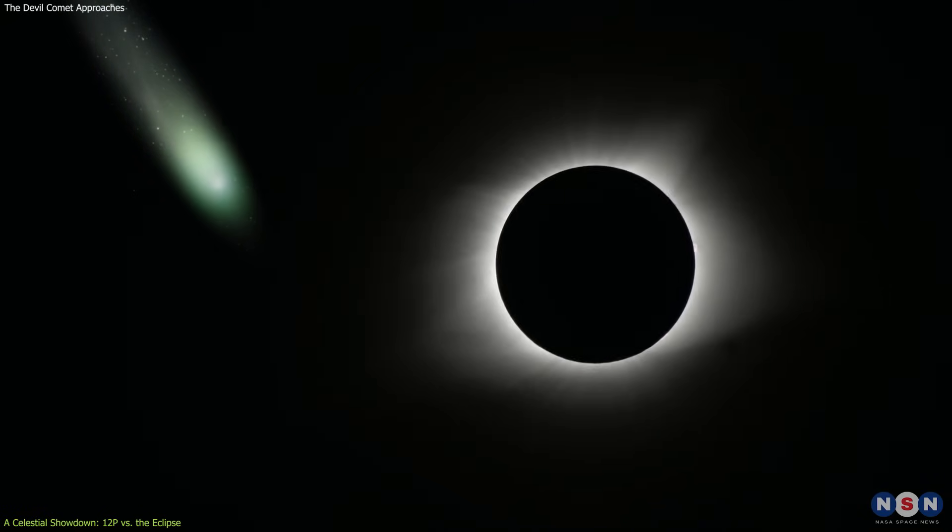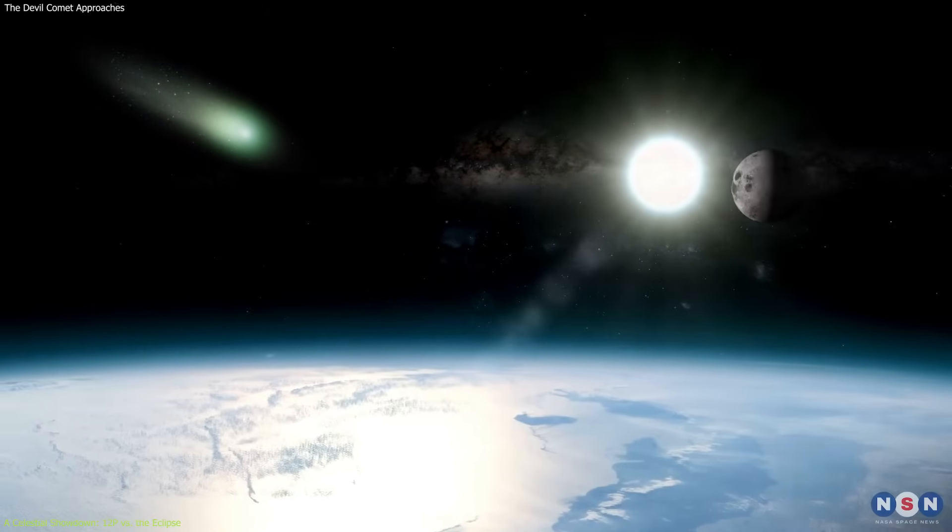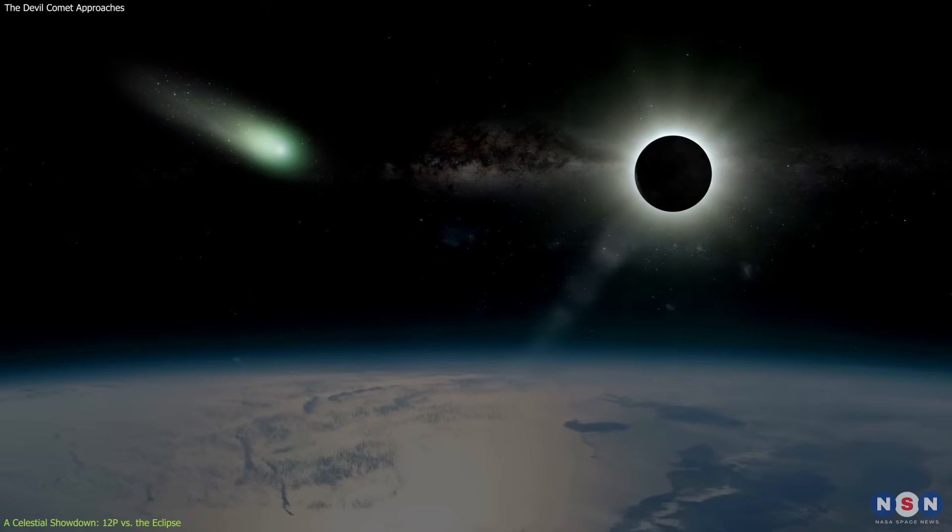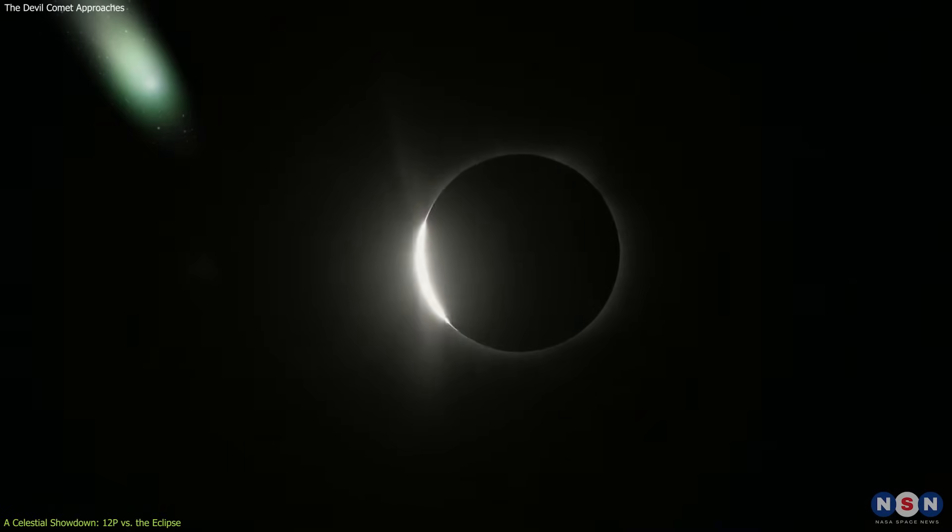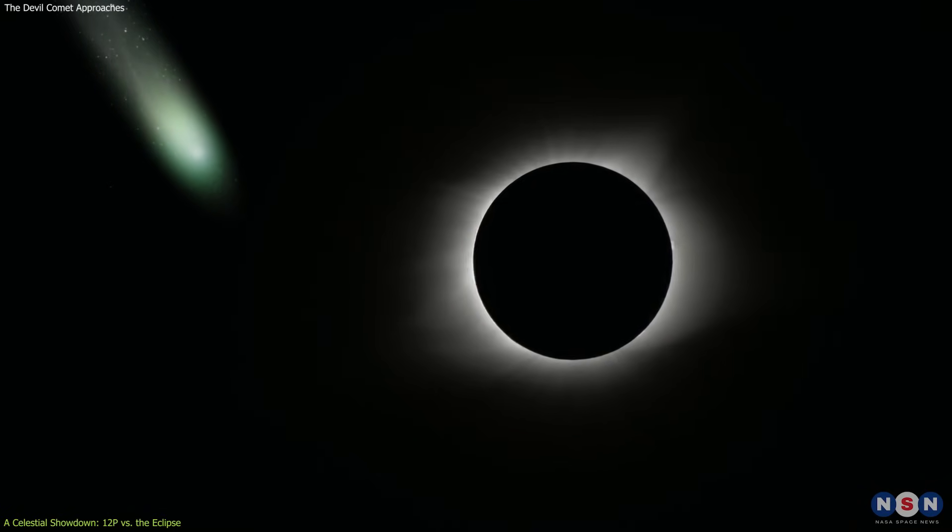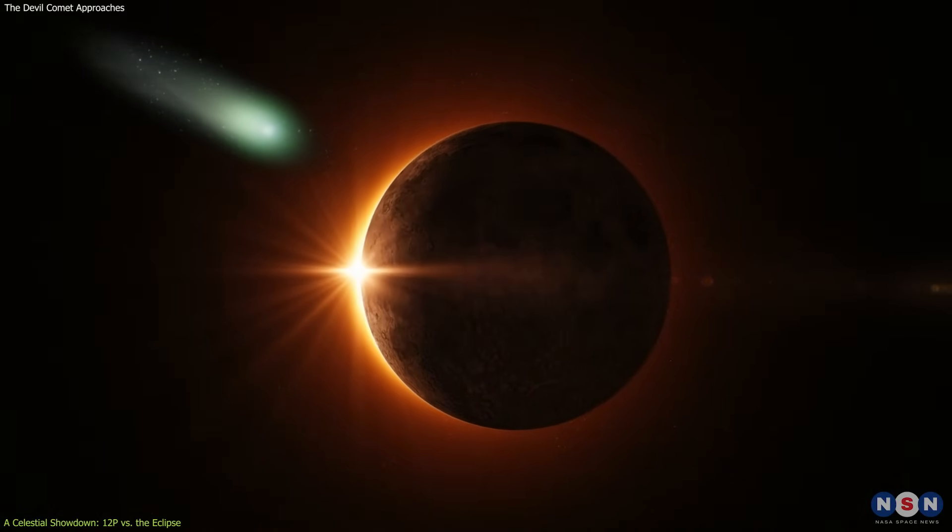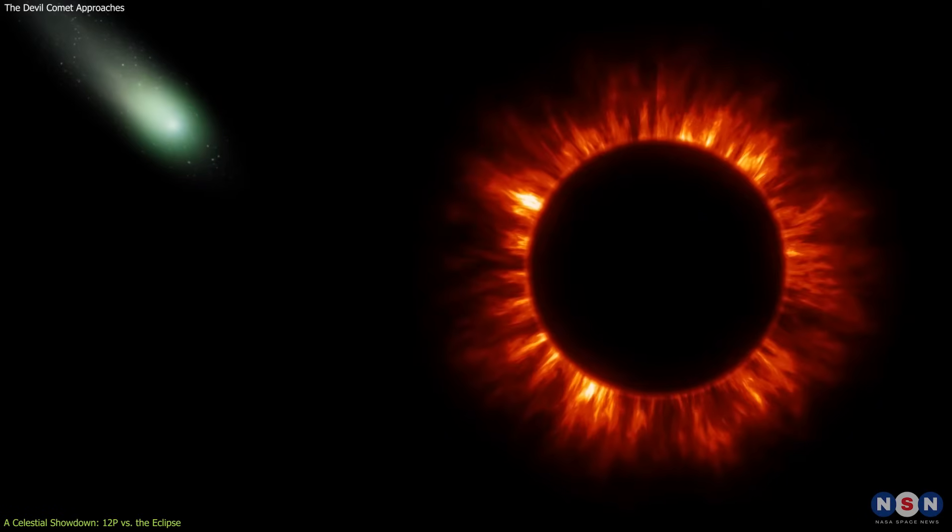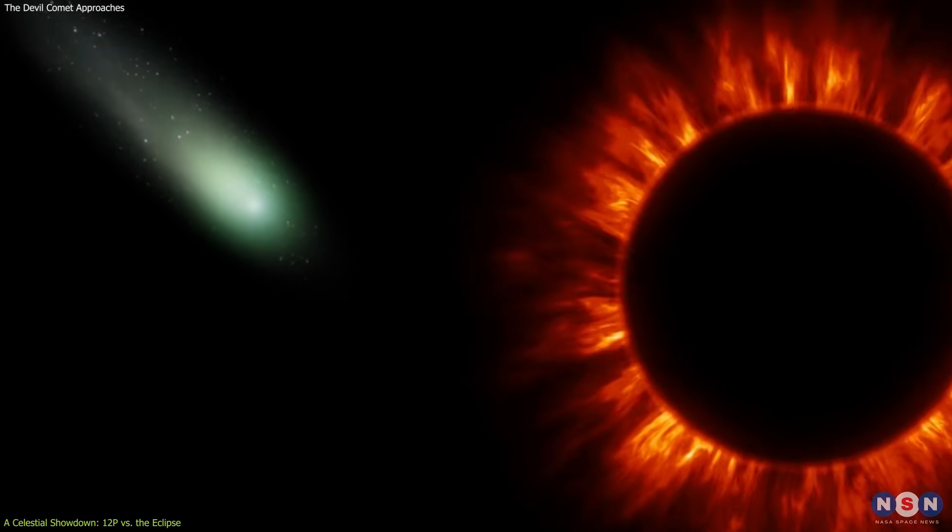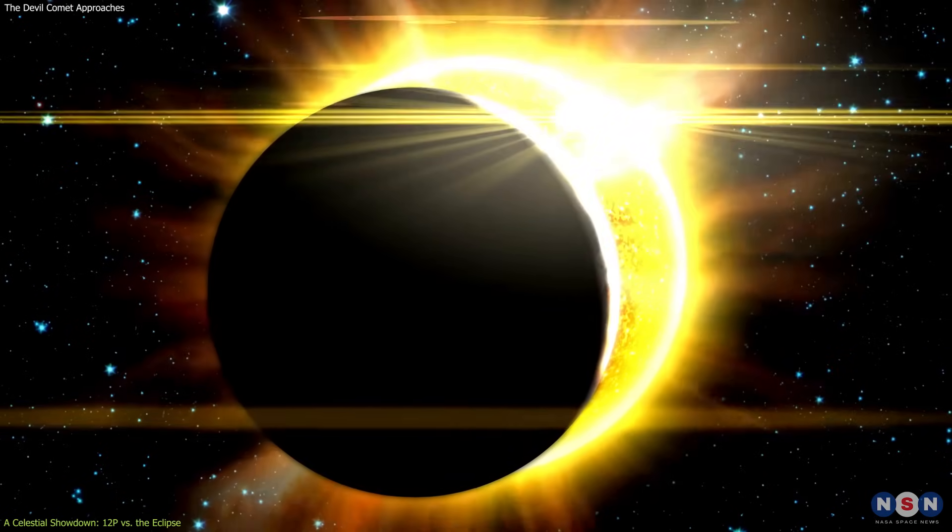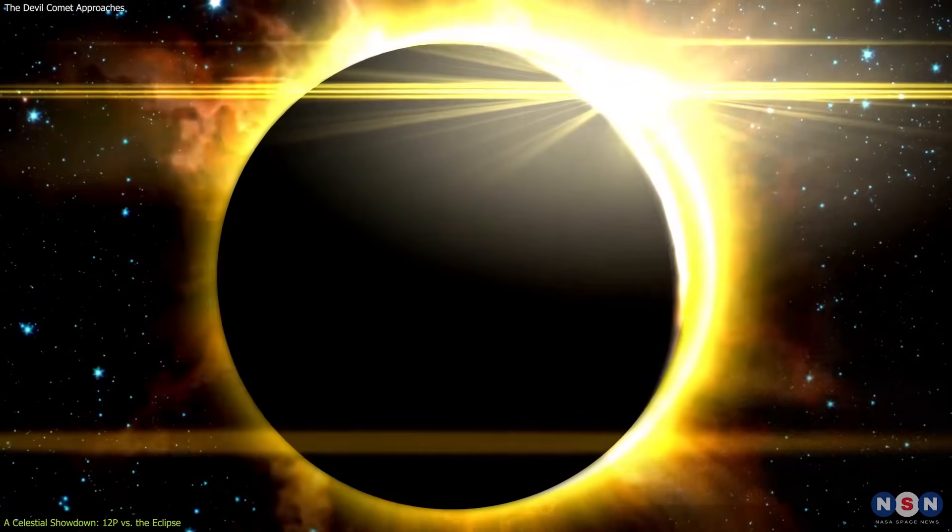However, this celestial rendezvous is not guaranteed. The visibility of the comet during the eclipse will depend on its activity in the weeks leading up to the event. A significant outburst could amplify its brightness, making it a prominent feature alongside the eclipsed sun. This presents a unique opportunity for scientists and astronomers to study the comet under the eclipse's shadow. The reduced solar glare could allow for more detailed observations of the comet's structure and behavior. Additionally, the timing of the eclipse could provide insights into the effects of reduced solar radiation on the comet's activity.